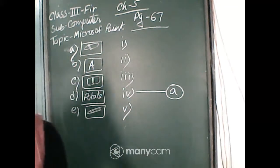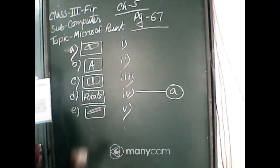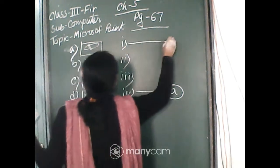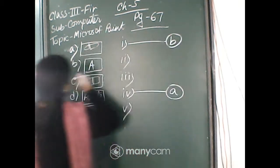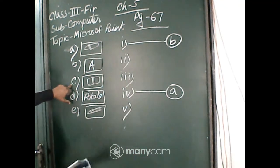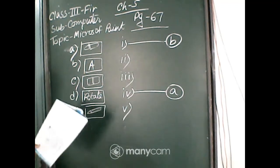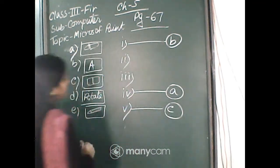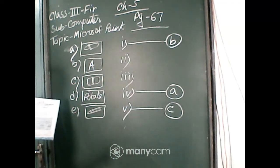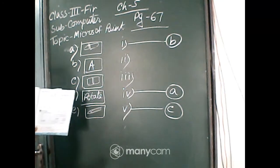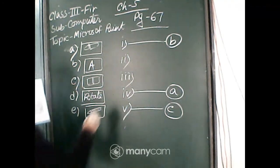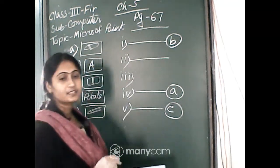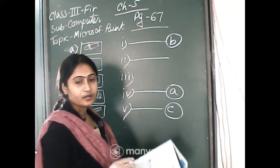Next, number B is the Text tool — used to type a message in the drawing. Number B, answer is 1. Number C is the Eraser tool — used to erase any part of the drawing, answer is 5. Number D is Rotate — to rotate the selected picture horizontally or vertically, answer is 2.